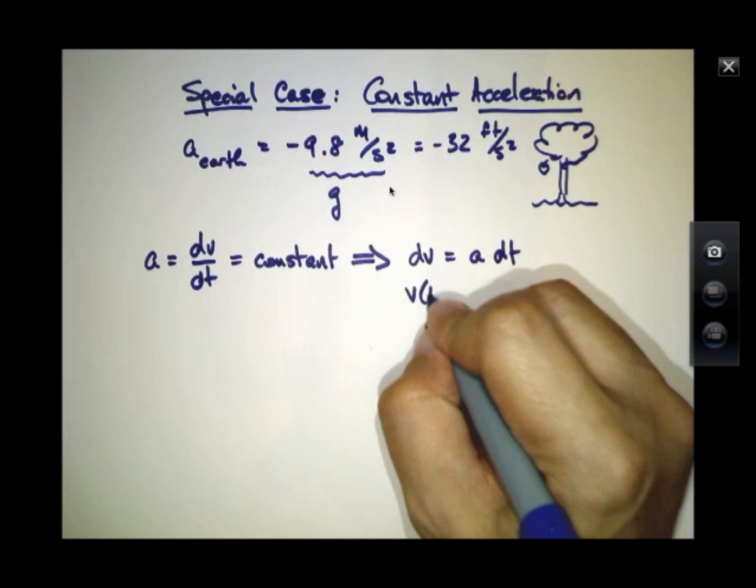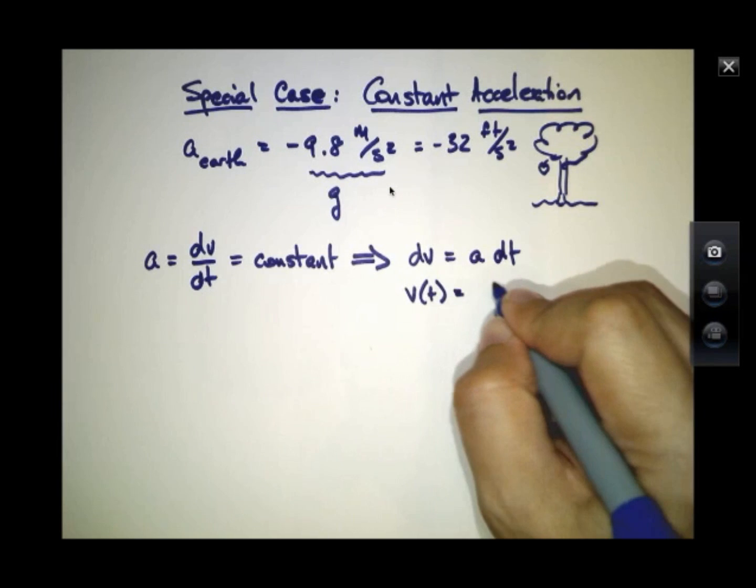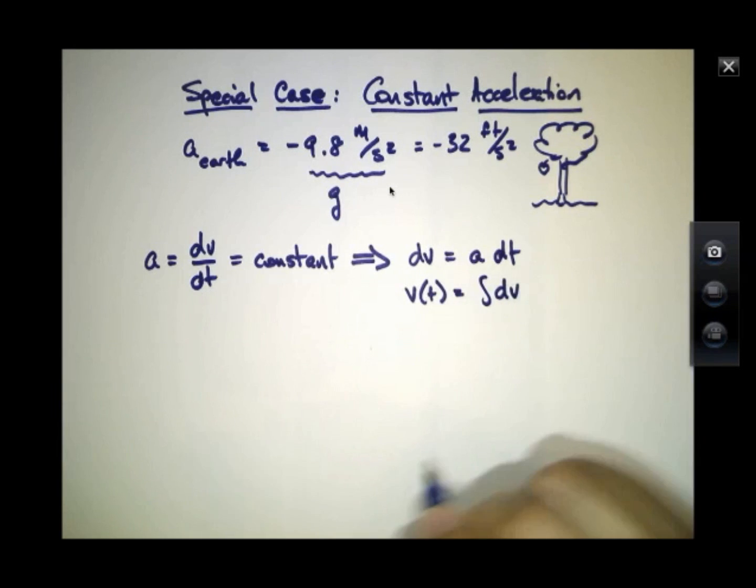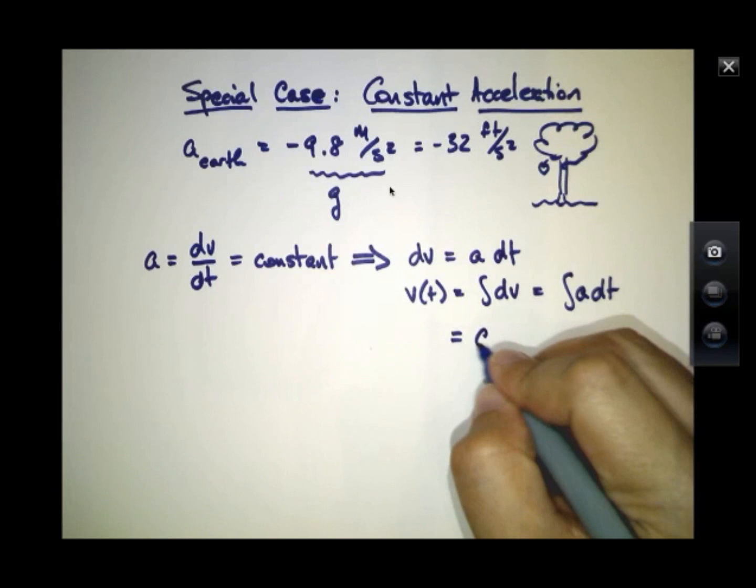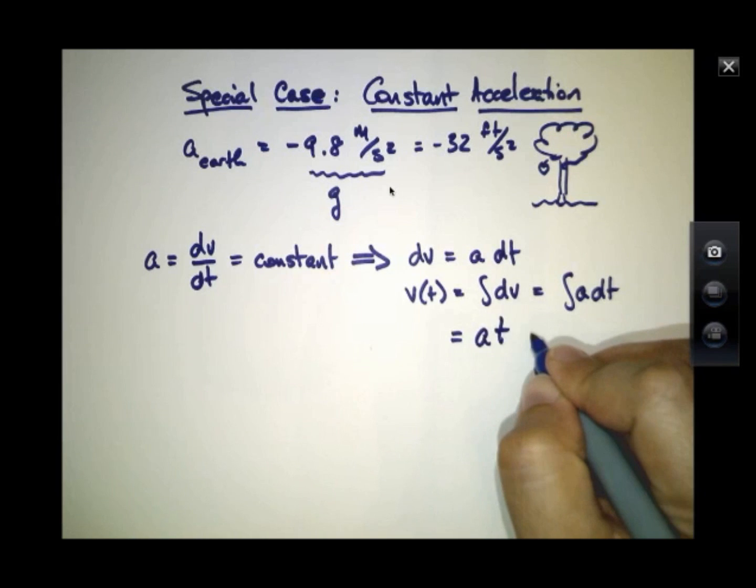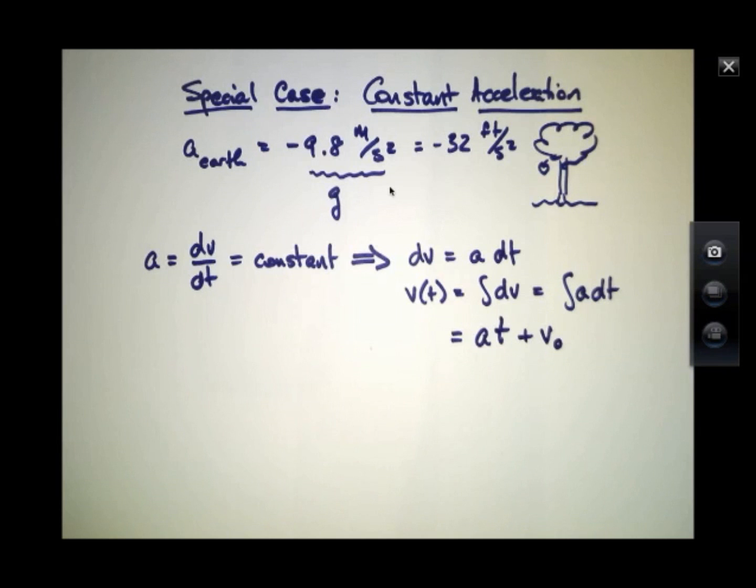And then v of t, the antiderivative, will be found by integrating dv, we're integrating a times dt. And that antiderivative will then equal at plus some constant. How did I do that? Well, if this a is a constant, it pulls out of the integral. It doesn't depend on time. And the integral of dt is just t. And you can always slip an extra constant on here.